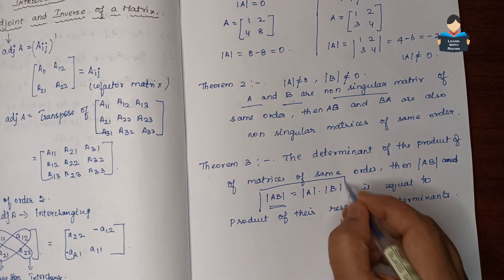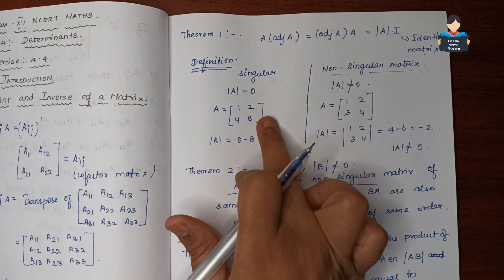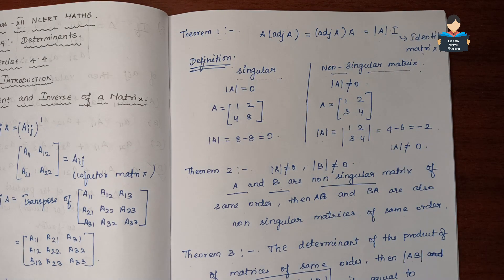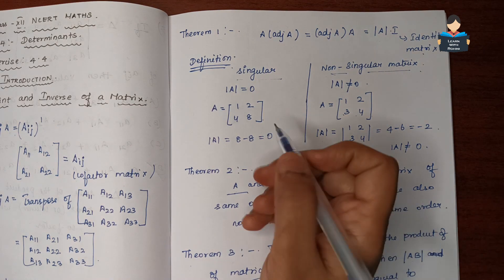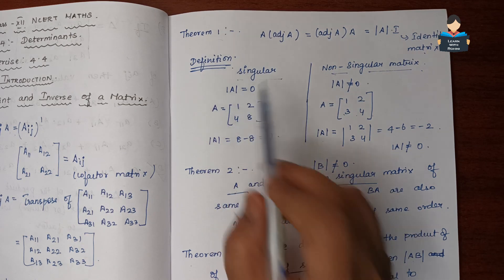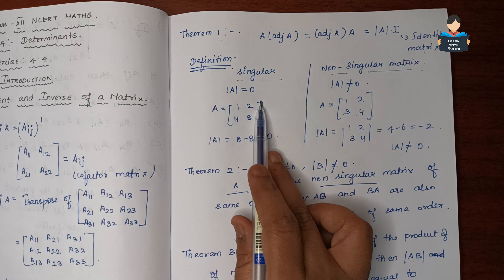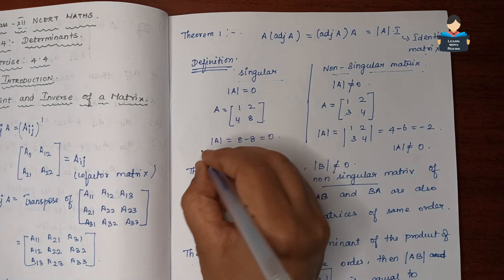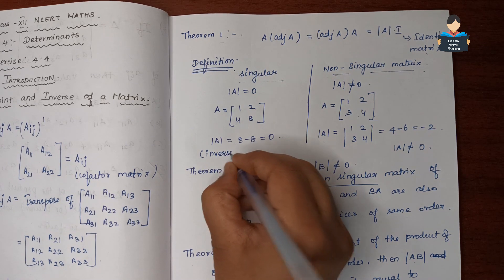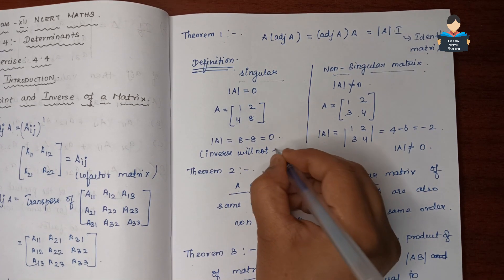For a singular matrix, the determinant of A equals 0, which means the inverse will not exist. So if determinant of A equals 0, the inverse does not exist.